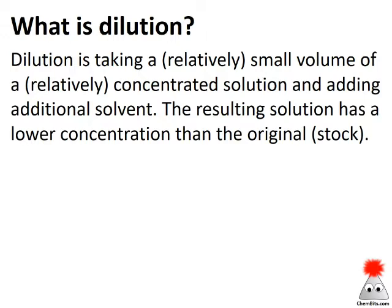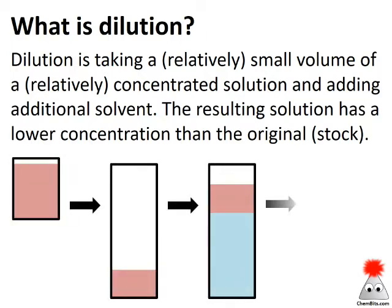When we dilute a solution, we're going to take a relatively small amount of a relatively concentrated solution that we're going to call the stock, and we're going to add it to some additional solvent. The resulting solution then has a lower concentration than the original. So we start with a stock, take a small measured amount of that, add it to some more solvent, and we end up with something that's diluted at a lower concentration.